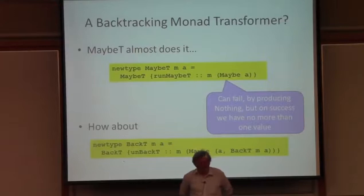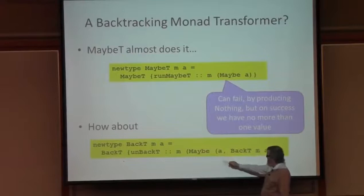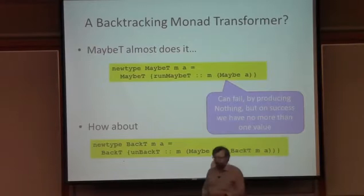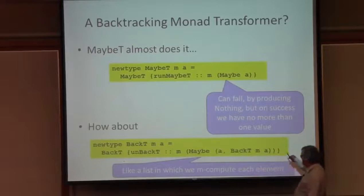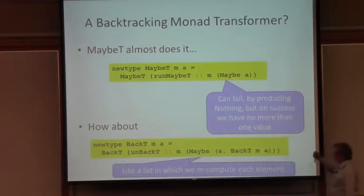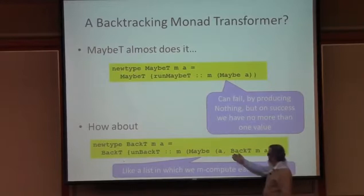So how about this type? Let's define a type called BackT, which is like maybe but does an underlying M computation that may fail, and when it succeeds gives not only a value but another backtracking computation that can be used to compute more A's. This is very much like a list type — it's a recursive type. BackT appears recursively, but it's like a list type in which there's an M wrapped around each production of an element. I do an M computation and then may get Nothing representing the empty list, or a pair corresponding to a cons.